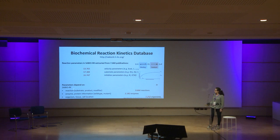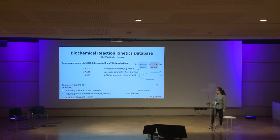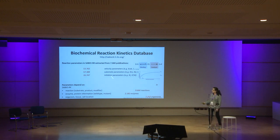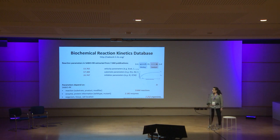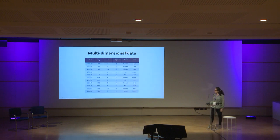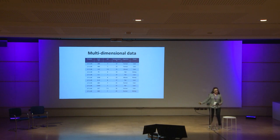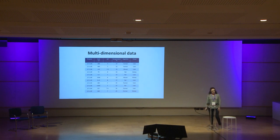This data is related to reactions, defined by substrates and products, but also includes enzyme information, organism, tissue, and cell location. What you cannot see here is that this data is also dependent on, for example, the pH value or the temperature. This is just a very simple example — not real data — just to show how multi-dimensional these data are.